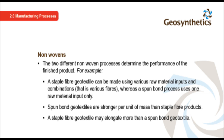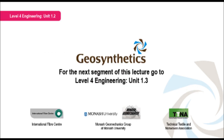For example, a staple fibre geotextile can be made using various raw material inputs and combinations — that is, various fibres. Whereas a spun bond process uses one raw material input only. Spun bond geotextiles are stronger per unit of mass than staple fibre products. A staple fibre geotextile may elongate more than a spun bond geotextile.